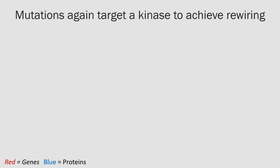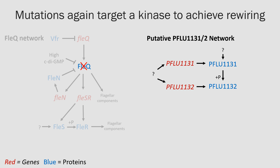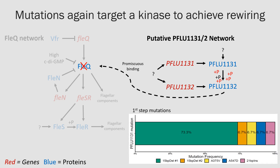When we look at the mutations that facilitate this alternative pathway, we see a similar story emerging. We see mutations in a putative kinase, PFLU1131, which phosphorylates the putative regulator PFLU1132. The mutations likely over-activate this kinase, leading to hyperphosphorylation and over-activation of the regulator. Because this regulator is also fleQ-homologous, it can start promiscuously binding flagella promoters and rescue flagella gene expression. All mutations are within the PFLU1131 kinase gene: 73% are identical 15-base pair deletions, and 86% occur within the same 26 base pairs, suggesting these mutations are highly constrained evolutionarily.